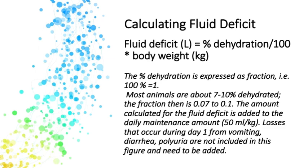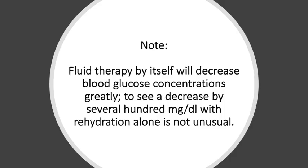One advantage of having a urinary catheter in place in a diabetic animal getting treated with aggressive amounts of fluids is, first, you want to make sure the kidneys are still functioning, and second, you want to make sure you're keeping up with the fluid loss associated with the diuresis. Fluid therapy by itself will often decrease blood glucose significantly, even before you start any insulin — sometimes several hundred milligrams per deciliter, even just after rehydrating the animal.